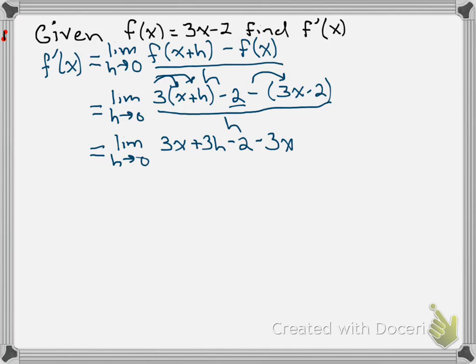Minus 3x, and a negative times a negative 2 becomes a positive 2 all over h.